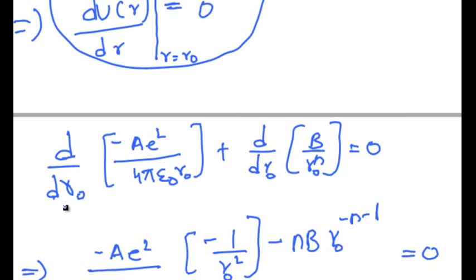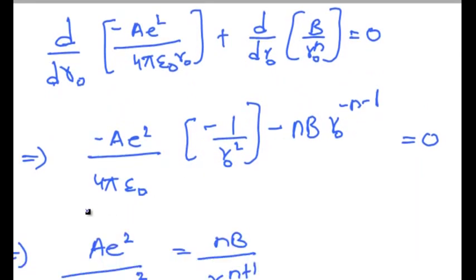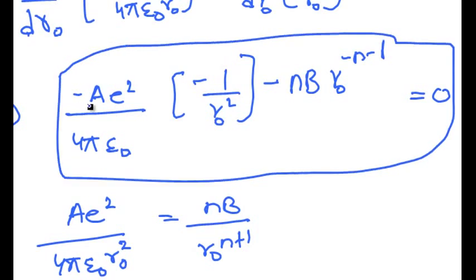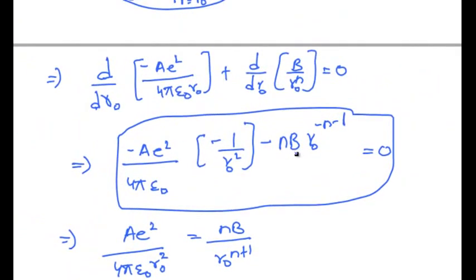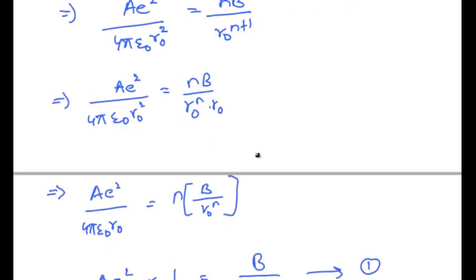This implies d by dr at r equal to r naught of minus a e square by 4 pi epsilon not into r naught plus b by r naught power n is equal to zero. Differentiating u of r gives: minus a e square by 4 pi epsilon not into minus 1 by r naught square minus n into b into r naught power minus n minus 1 is equal to zero. That implies a e square by 4 pi epsilon not into r naught square is equal to n b by r naught power n plus 1.